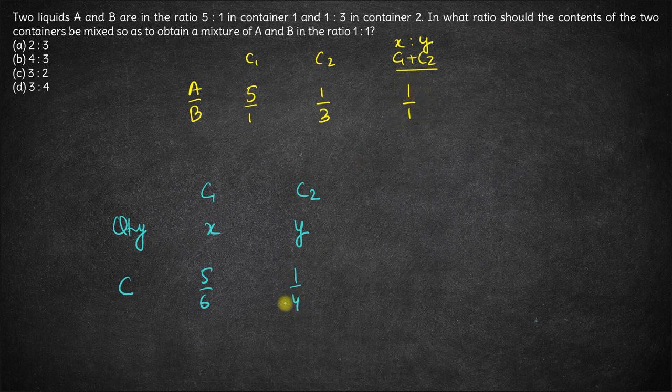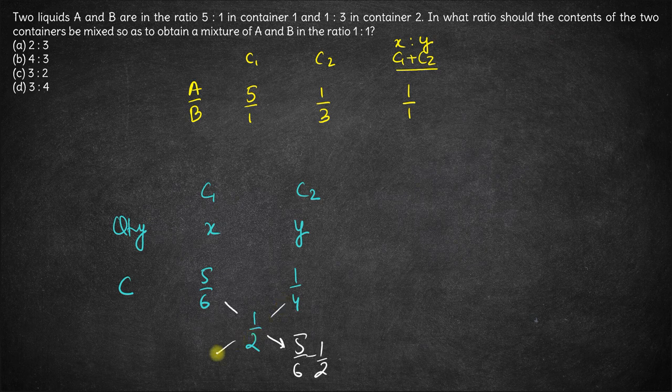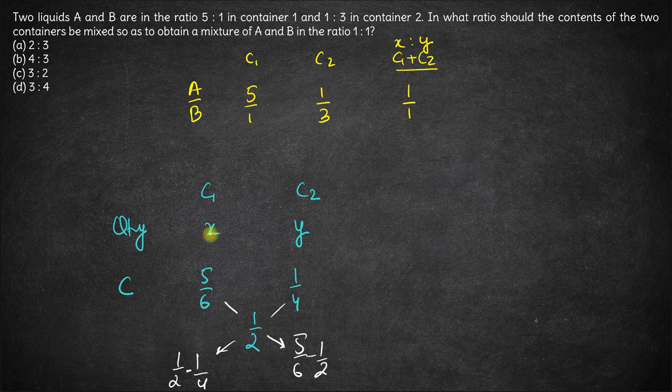The fraction of A in the final will be half, 1 by 2. Now, using allegation, we have 5 by 6 minus half over here and half minus 1 by 4 over here.